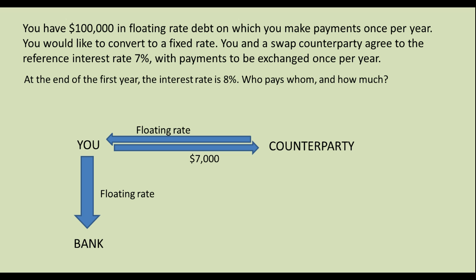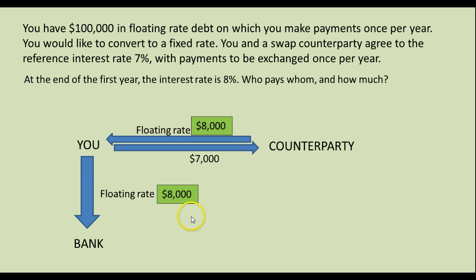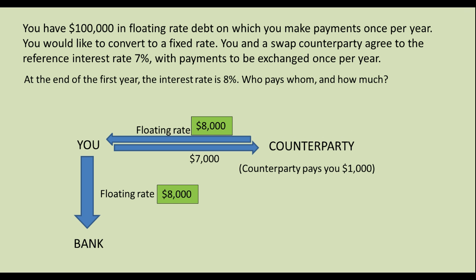We can now answer a question like this: at the end of the first year the interest rate is 8% — who pays whom and how much? Well, if the interest rate is 8%, that means the floating rate requires a payment of $8,000. So you are going to pay the bank $8,000 because that's your obligation to the bank. But the counterparty is going to pay you the $8,000, and you are going to pay the counterparty $7,000. The net effect is that the counterparty pays you $1,000.